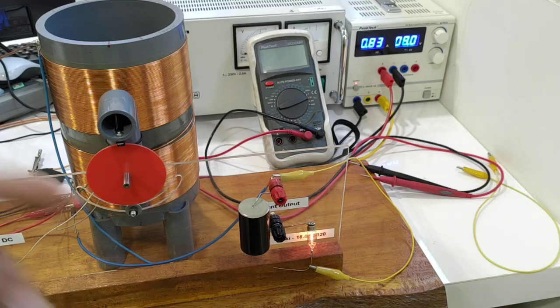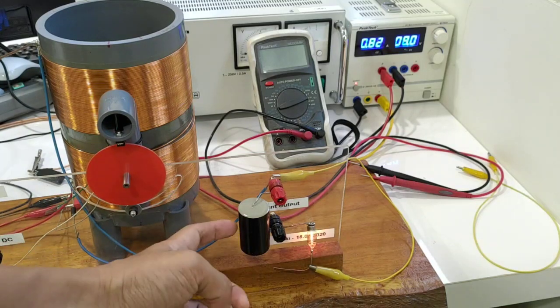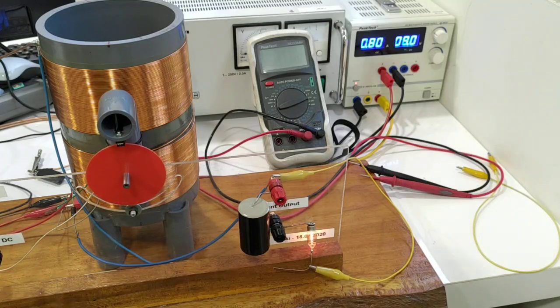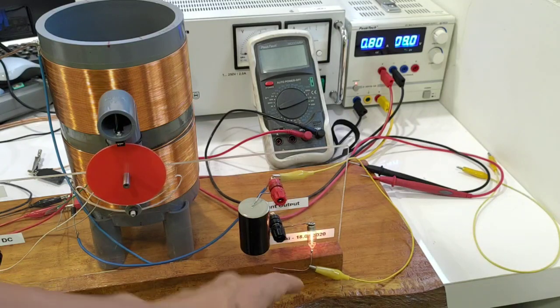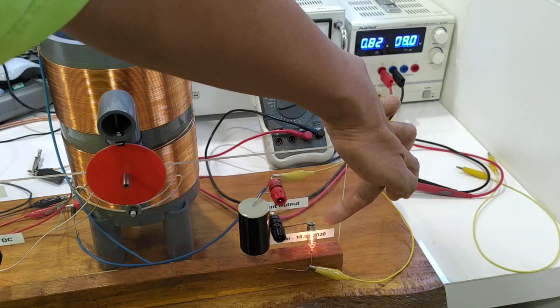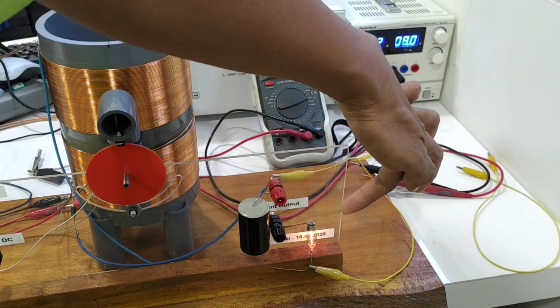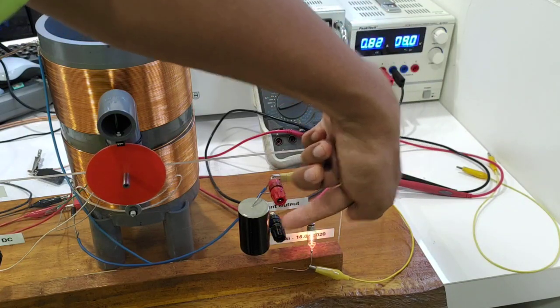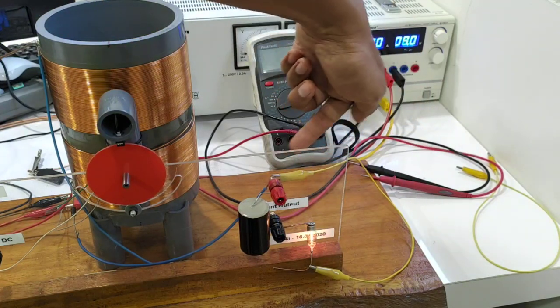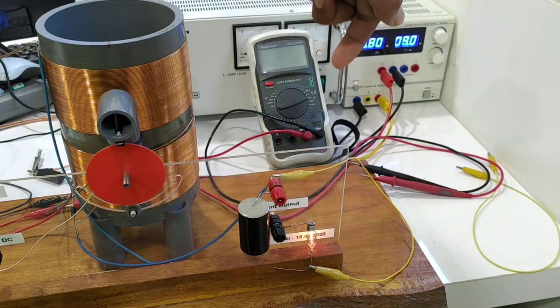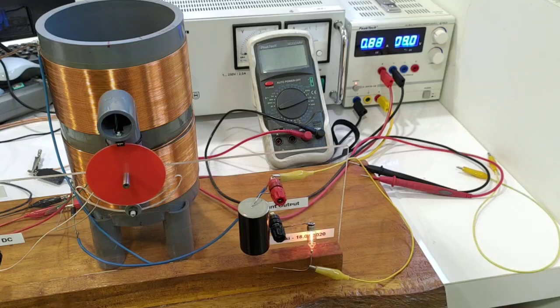I put the capacitor here directly to the output terminals, and then I connect the light bulb, the load, parallel to the capacitor. You can see the yellow cable here. Now I'm going to measure the voltage.